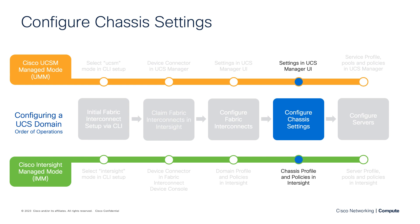Next, we can optionally configure settings specific to our blade chassis. These include items such as power redundancy, fan control settings, SNMP, and more. In a UMM domain, you configure these settings within the UCS Manager UI with no profile or policies governing this configuration. For an IMM domain, we have a new chassis profile and an associated set of chassis profile policies which configure these settings within IMM. Note that a chassis profile is optional and not required for configuring an IMM domain.